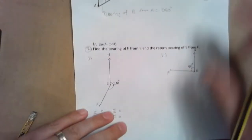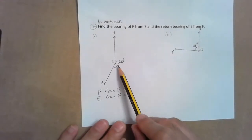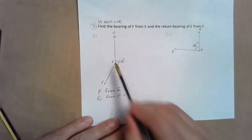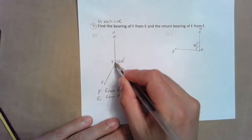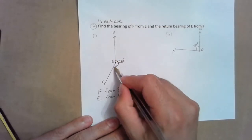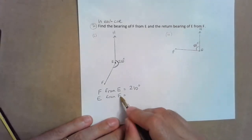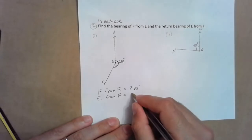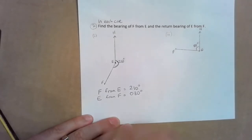So the bearing of A from B — we just add 180. Let's look at another example. We're given an angle and asked to find the bearing of F from E, and E from F. The bearing of F from E is north clockwise from E, which is already given to us. E from F is the return bearing, so it's 180 degrees less, which gives 030.